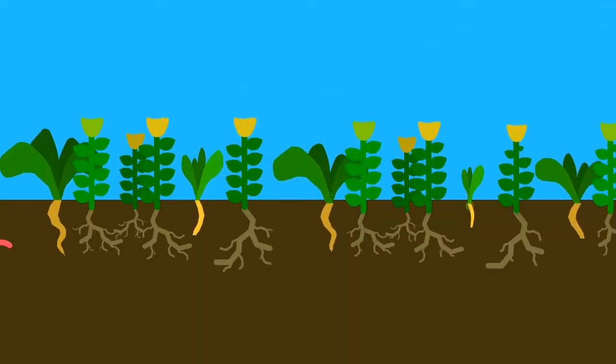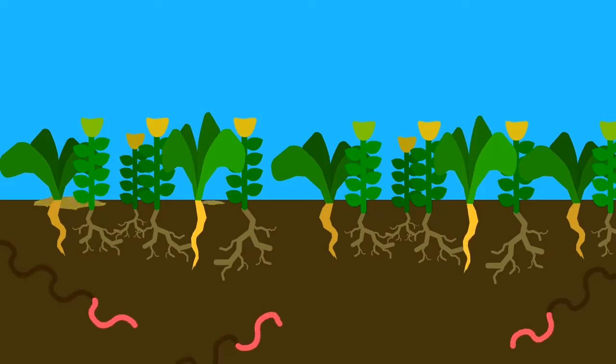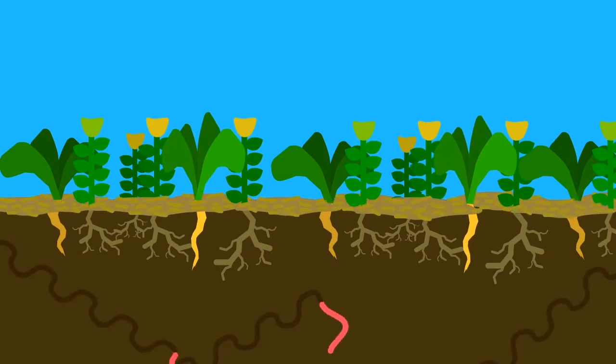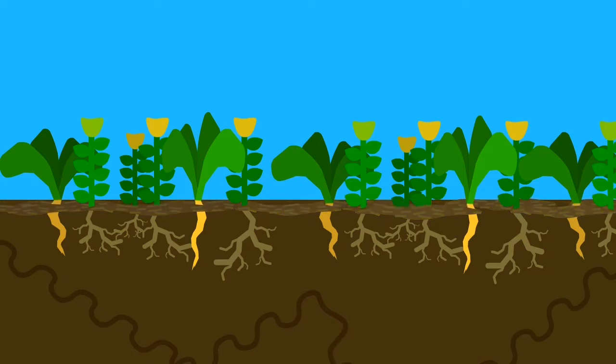Instead of tilling, plant cover crops whose roots break up the soil. Let the worms aerate the soil and bring down nutrients. Keep the soil covered with an organic mulch which will break down over time, adding more organic matter to the soil.